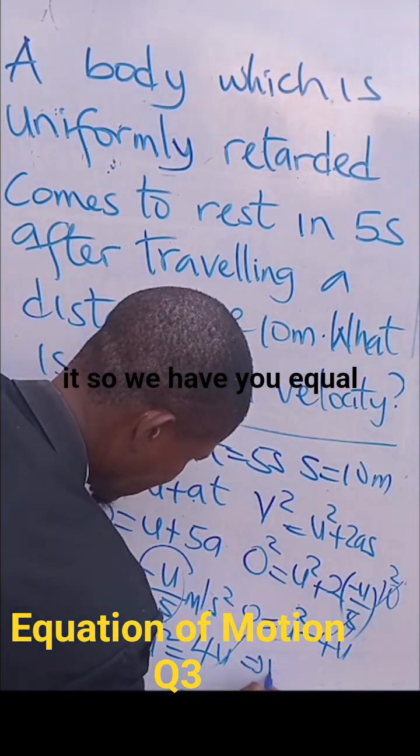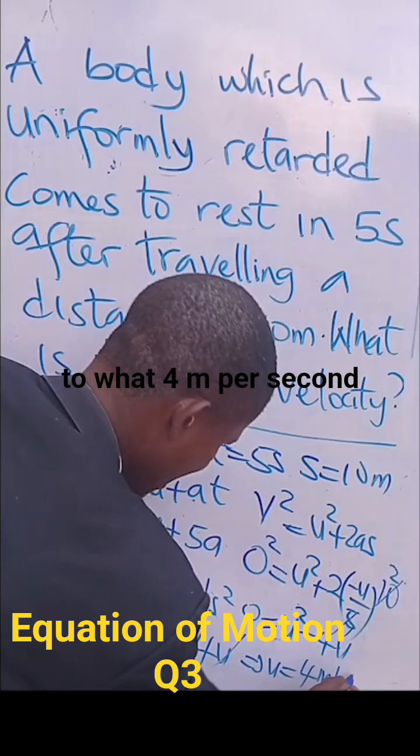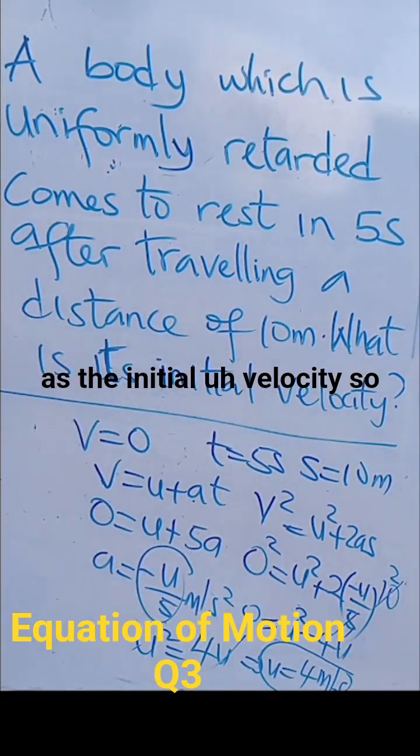So, we have U equal to what? 4 meter per second as the initial velocity.